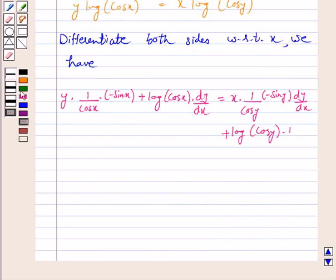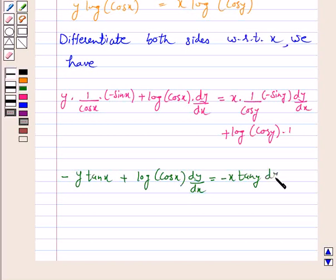This implies -y tan x + log(cos x) · dy/dx = -x tan y · dy/dx + log(cos y). Now combining the terms containing dy/dx.